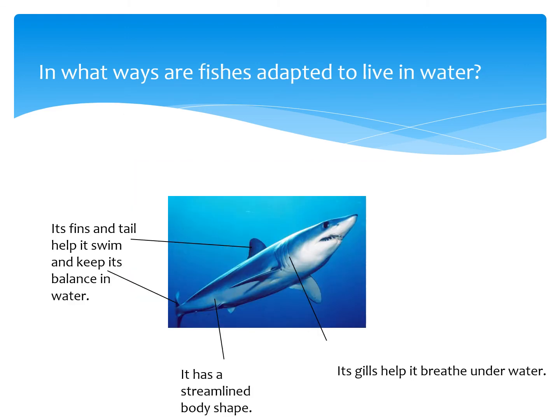The third example is: in what ways are fishes adapted to live in water? Fishes live in water such as ponds, rivers, and oceans. A shark is a fish that lives in the ocean. Its fins and tail help it to swim and keep its balance. Its streamlined body shape reduces water resistance to help it move quickly, and its gills help it breathe underwater.